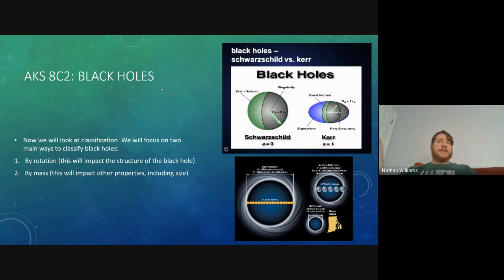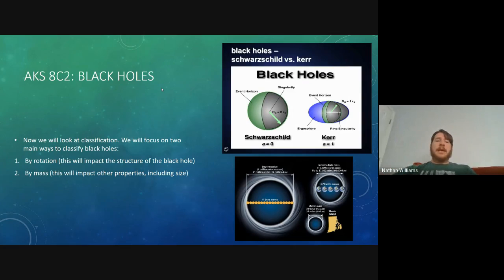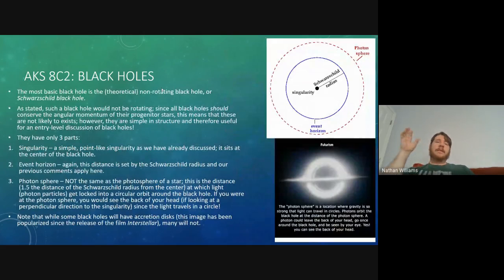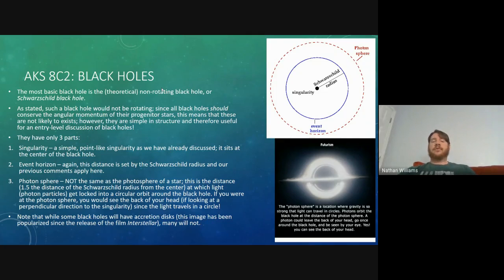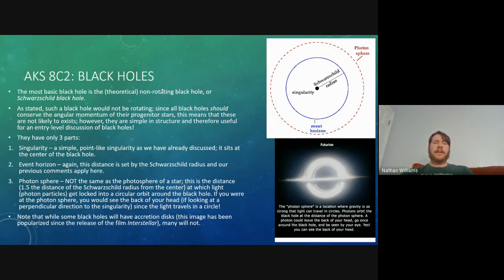We're going to focus on classifying black holes by two things: rotation and mass. The most basic theoretical black hole is called a non-rotating black hole, or more properly, the Schwarzschild black hole, named after Karl Schwarzschild — the same name we brought up in part one when calculating the Schwarzschild radius. You'll learn more about him in the Black Hole Apocalypse video.